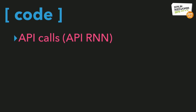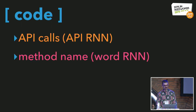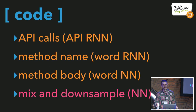To recap the code pipeline: first, we create an embedding for the API call sequence by making small-dimensional representations of each call, then combining them with an RNN and max pooling. Second, we create an embedding of the method name by breaking it into words, applying Word2Vec, another RNN, and max pooling. Third, we find all unique word tokens in the method body, convert them to small-dimensional vectors, pass them through a feedforward neural network, and max pool. Finally, we concatenate the three embedding vectors and pass them through a feedforward neural net.